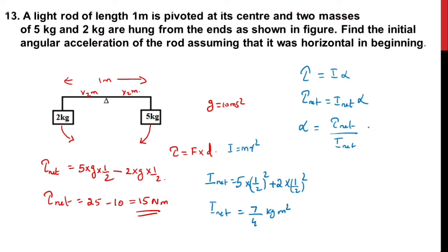Let us do the calculation. We can substitute τ_net equals 15 and I_net equals 7/4. Multiplying by 4, that is 60 divided by 7. So the final answer is 8.57 rad/s². I hope you understood this. Thank you.